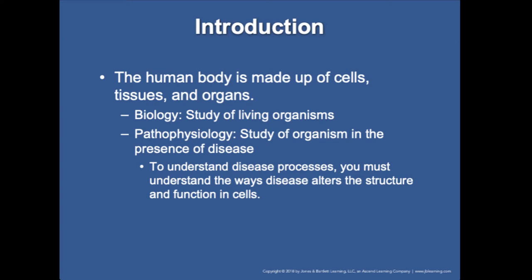Chapter nine will take what we learned in chapter eight on parts of the body and look at them in more detail — their function and recognizing when there's an alteration in their function. When a patient is having a medical problem, we will recognize and determine where their issue comes from by understanding normal cell, organ, or organ system function, and trace down what's gone wrong. We do this a lot when treating patients for shock, respiratory issues, and cardiac issues.